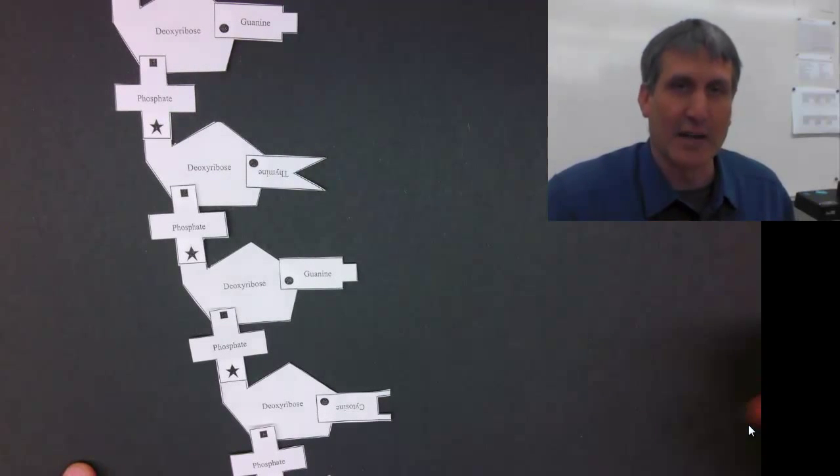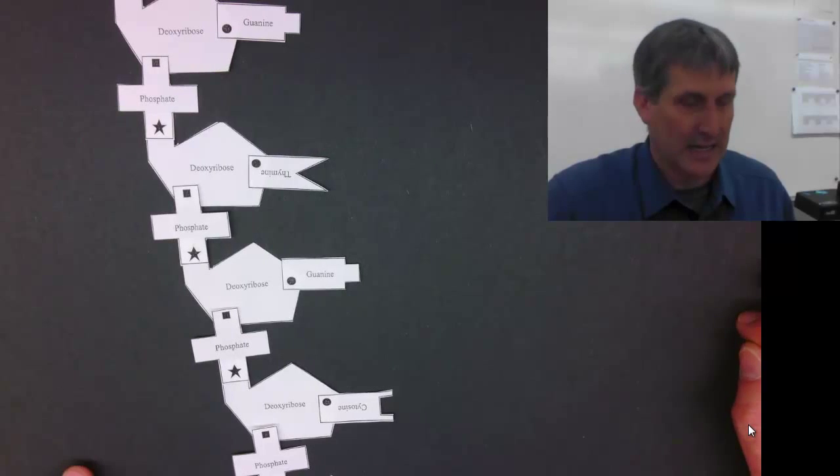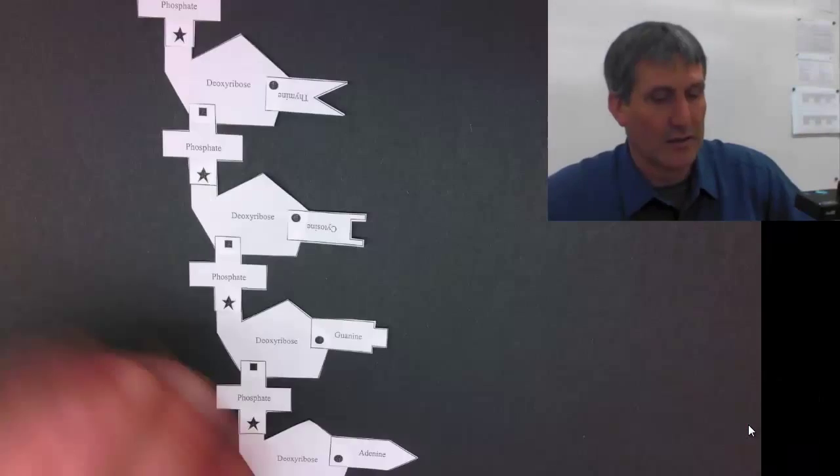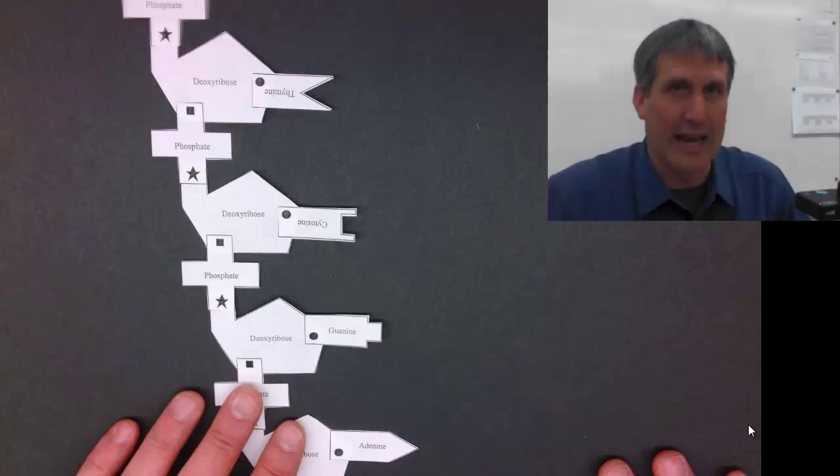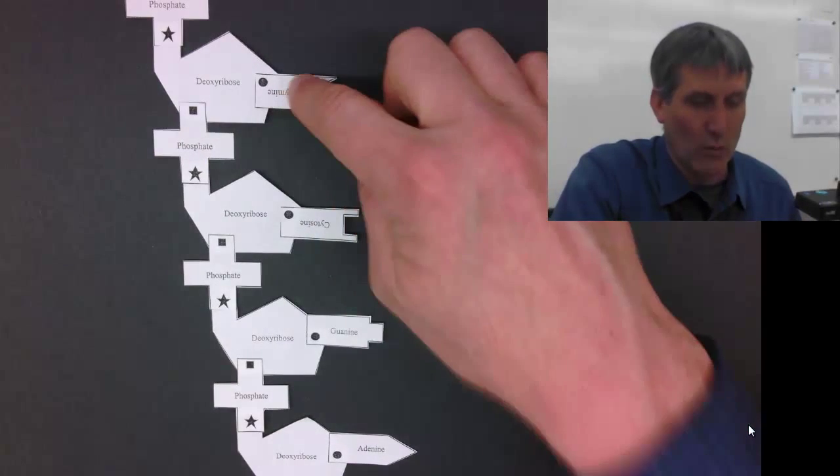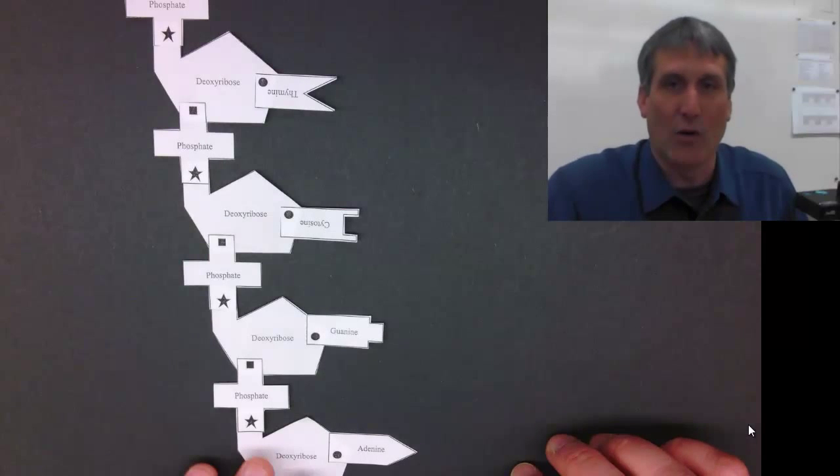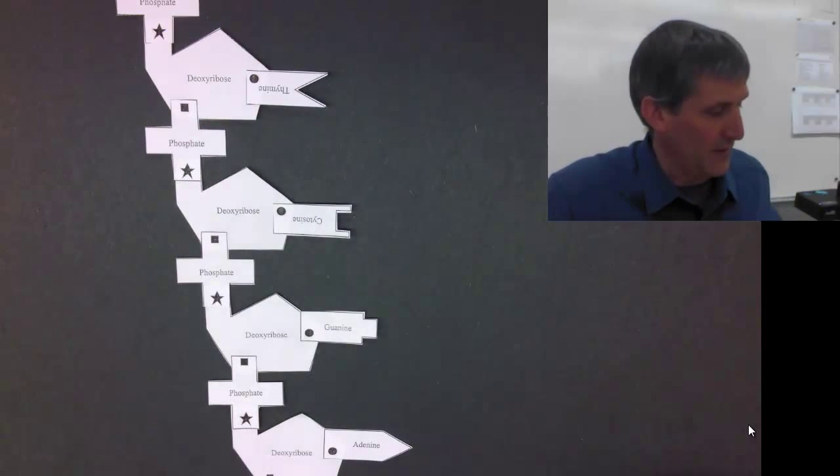So this makes up one strand of DNA, but DNA is a double-stranded molecule. So let's look at another example. So here's a single strand of DNA. We have actually one of each type of base, but these bases can be in any order. They don't have to be in a specific order.